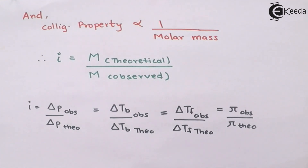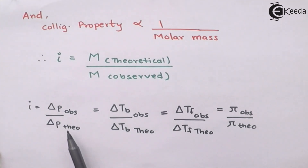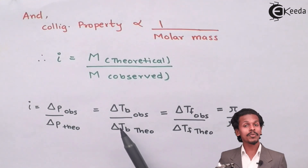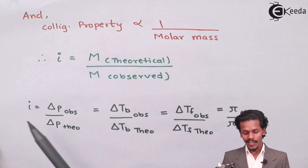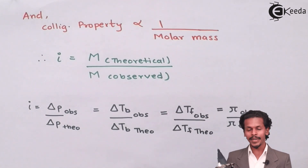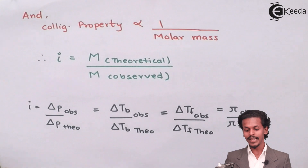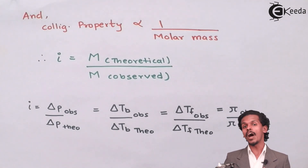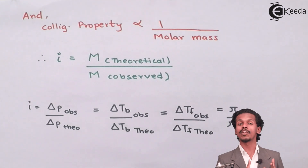So we now have a clear idea of the Van't Hoff factor and how to calculate it for each of the four colligative properties. For relative lowering of vapor pressure: i = ΔP_observed / ΔP_theoretical. For elevation of boiling point: i = ΔTb_observed / ΔTb_theoretical. For depression of freezing point: i = ΔTf_observed / ΔTf_theoretical. For osmotic pressure: i = π_observed / π_theoretical. This shows how the Van't Hoff factor changes depending on whether the solute undergoes association or dissociation.